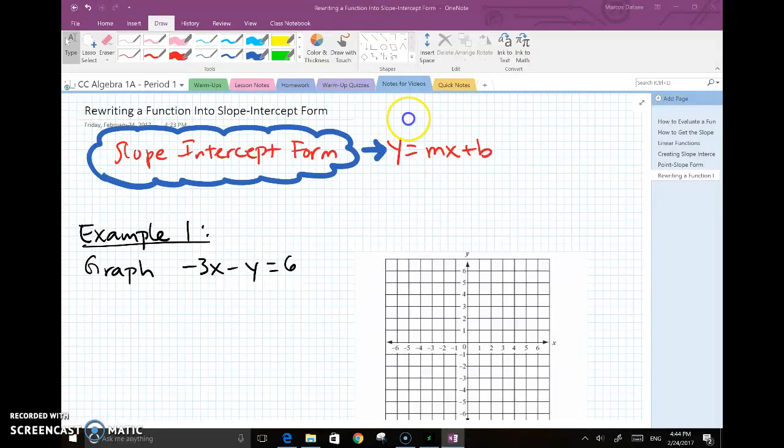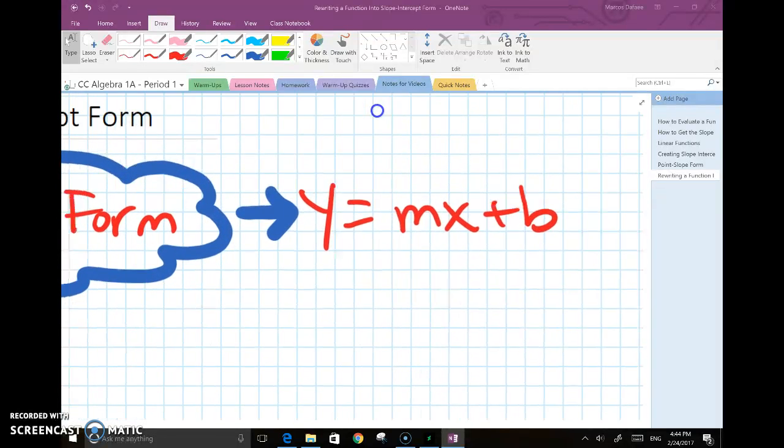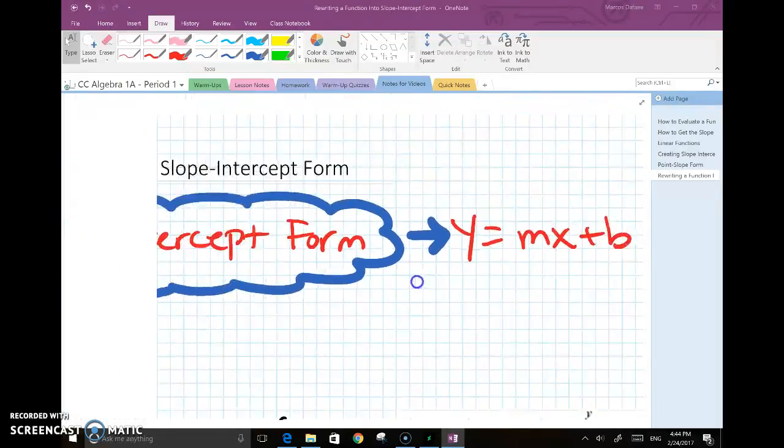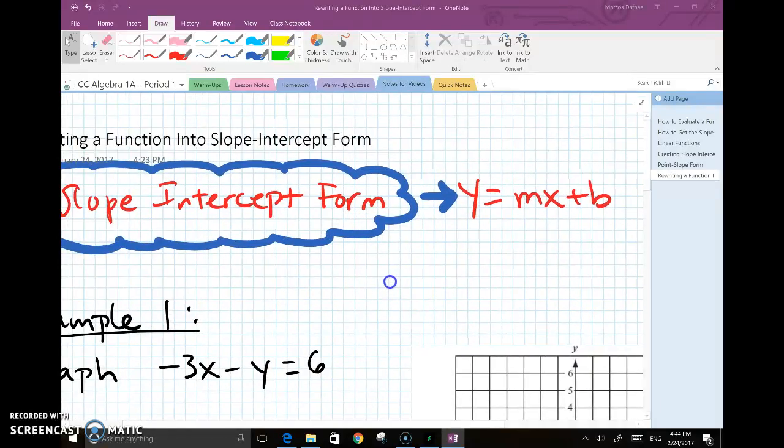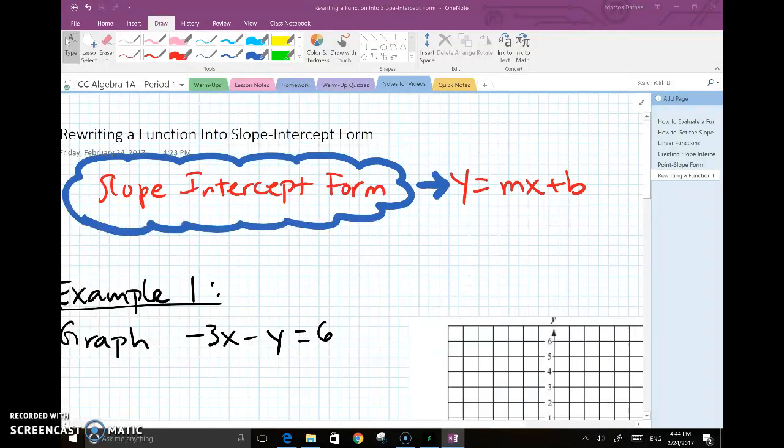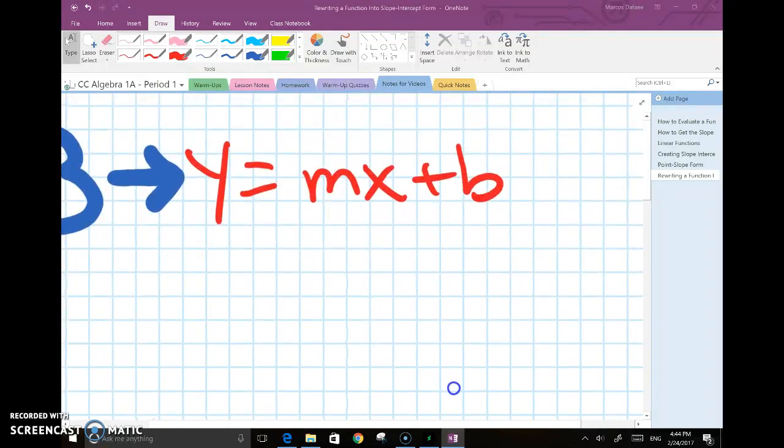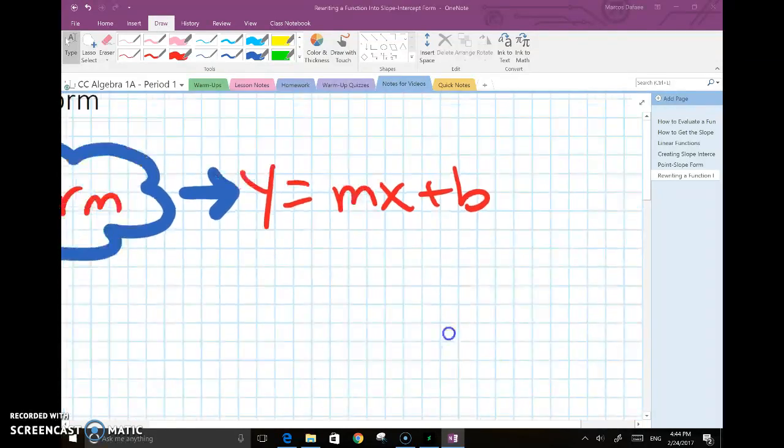Remember that slope-intercept form is y equals mx plus b, and I think it's important to note that just from the start so that we're clear when you read or hear slope-intercept form, you associate that with y equals mx plus b.